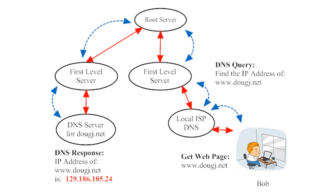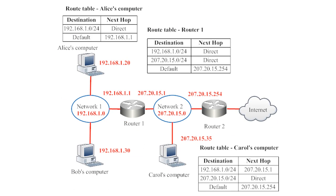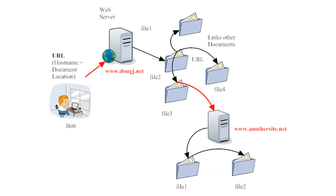So far, we've examined how computers use domain name service or DNS servers to translate domain names that are easy for people to read into IP addresses that are easy for computers to read. We've also examined how computers and routers use route tables to route information through networks. Now we're going to examine one last illustration that will help you to see how computers access webpages. Webpages are special documents that are stored on high-capacity computers called web servers. When you access a webpage on your computer, you send an information request to the IP address of a server, and the server sends that information back to the IP address of your computer.